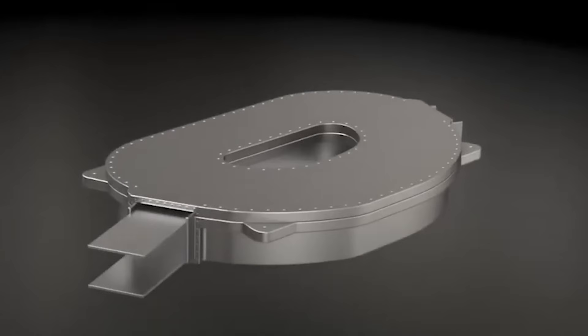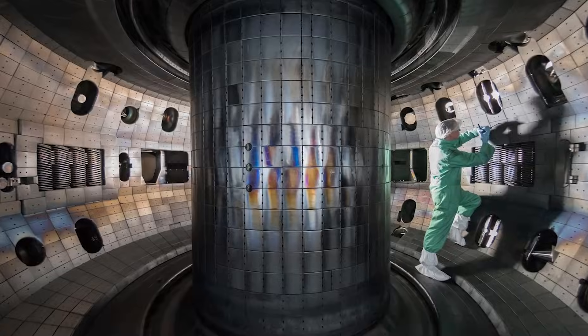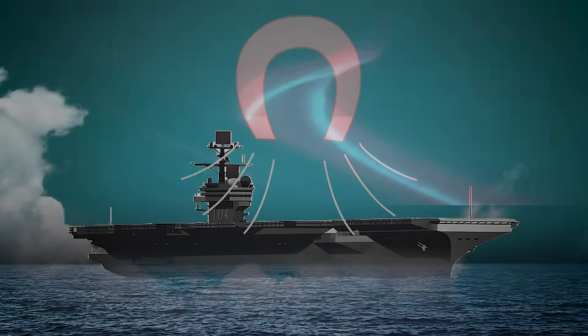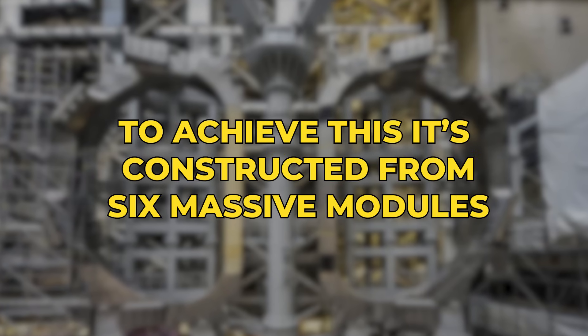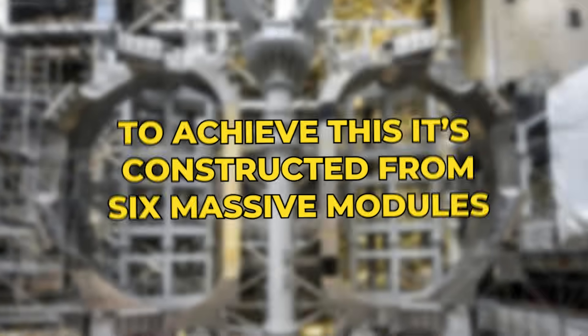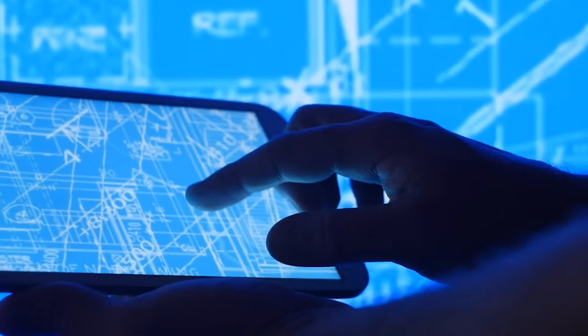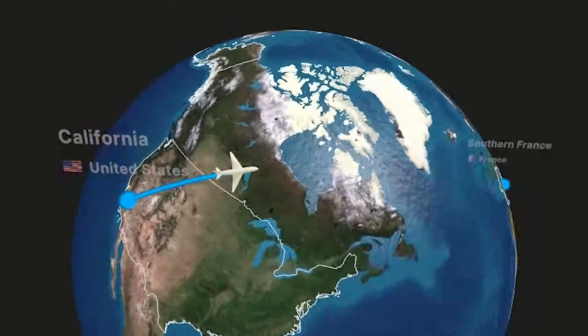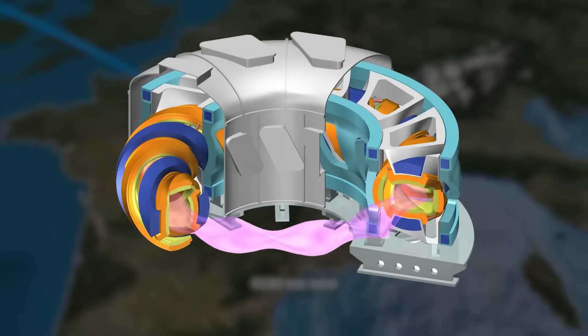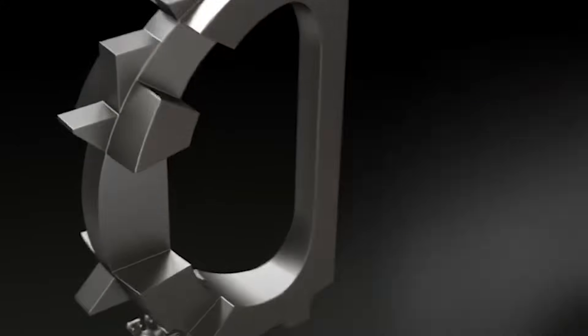This magnet is colossal. Nearly 60 feet tall, wider than a city bus, and weighing more than a thousand tons. Its strength is so extreme that engineers compare it to lifting an aircraft carrier straight off the ground. To achieve this, it's constructed from six massive modules, each weighing over 270,000 pounds. Every module took years to design, test, and perfect, before making the long journey from California to southern France. Once stacked together, these modules form the most powerful pulsed superconducting magnet ever made.